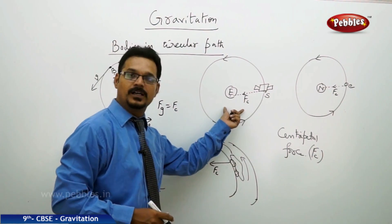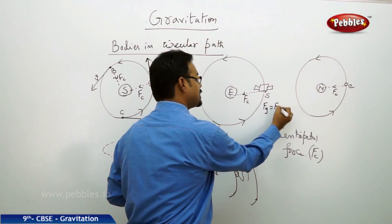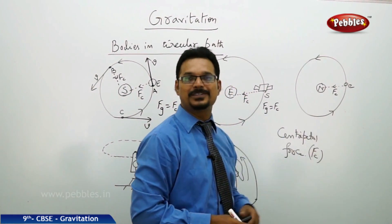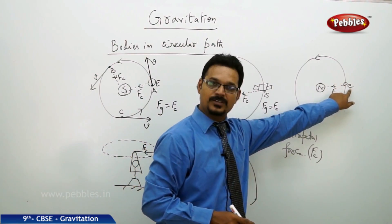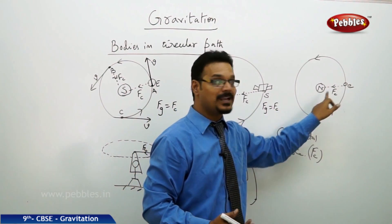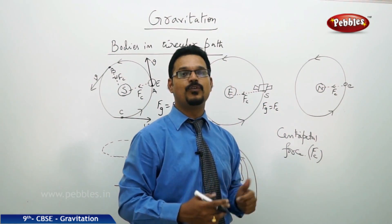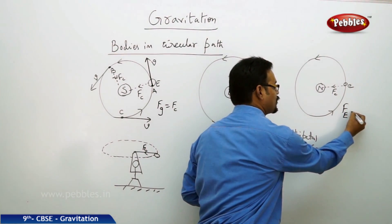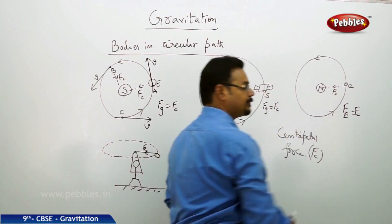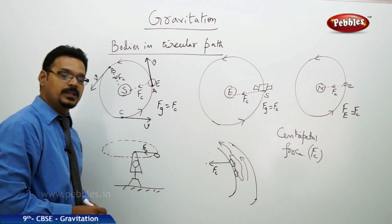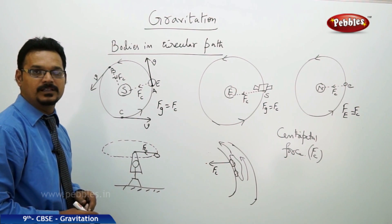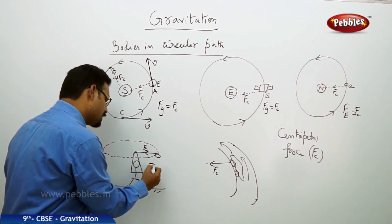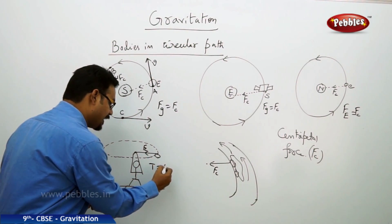For the satellite, the gravitational force of the Earth acts like centripetal force. For the electron — recalling atomic models — the electron has a negative charge and the nucleus has a positive charge. When charges are unlike, there is an attraction force called Coulomb force, also known as electric force Fe. This electric force is acting like centripetal force. For the string whirling a stone, the actual force is the tension T in the string, and this tension acts like centripetal force.